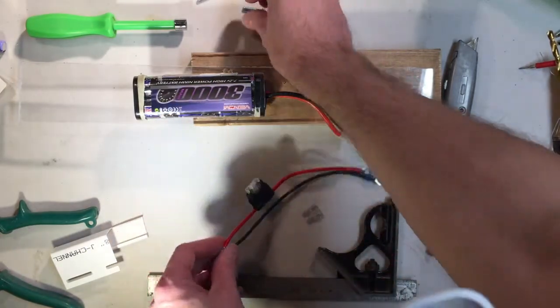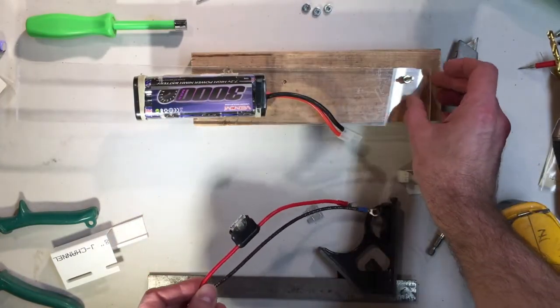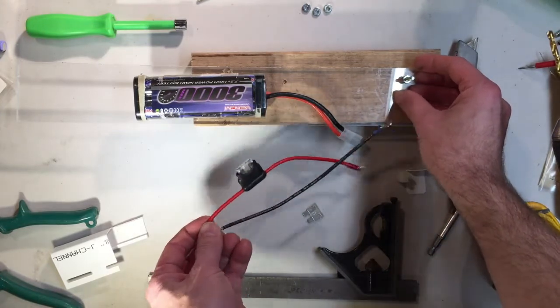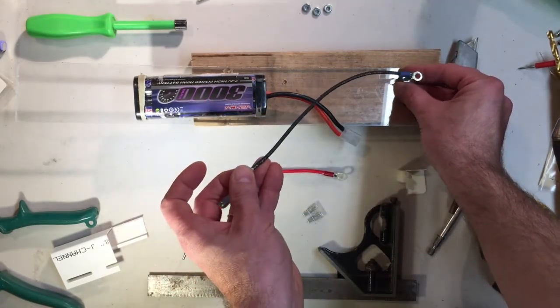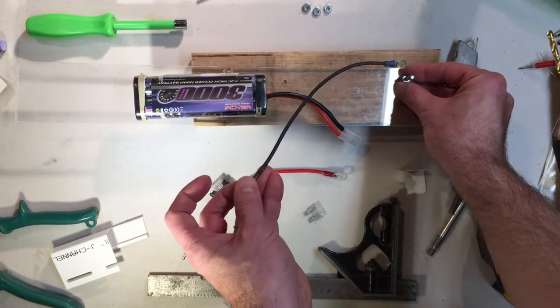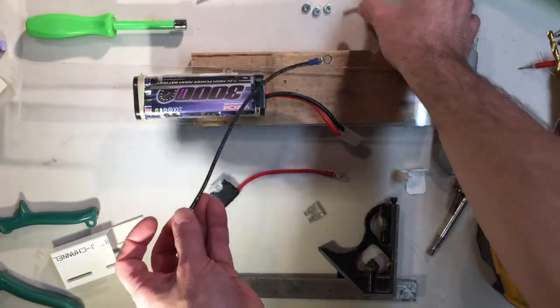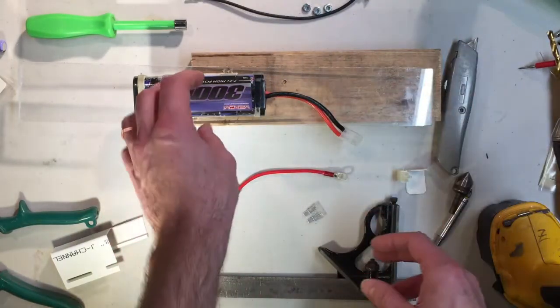And then drill some holes in the plastic and put some screws in there. And then the screws are going to serve as electrical contacts for these ring terminals. And we're going to use that to make a nice, reliable power system.